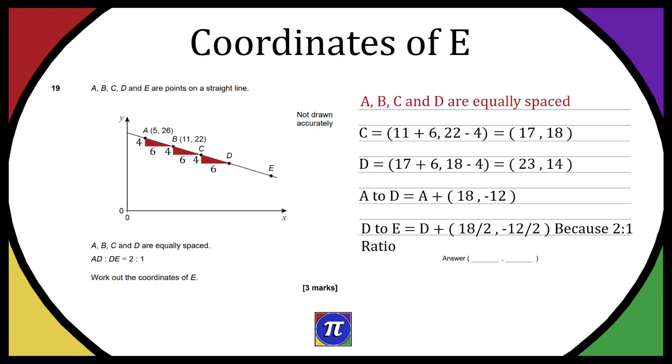So D to E is just going to be point D plus 18 over 2 minus 12 over 2 for the y-axis, because of the 2 to 1 ratio. So point E is just going to be point D plus 9 minus 6, so E is going to be equal to (23, 14) plus (9, -6), so E equals (32, 8).